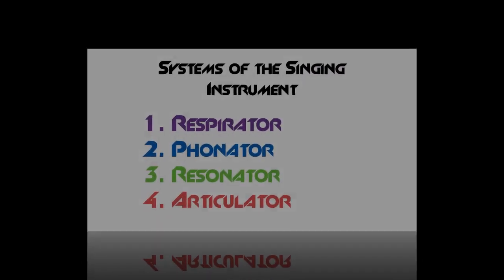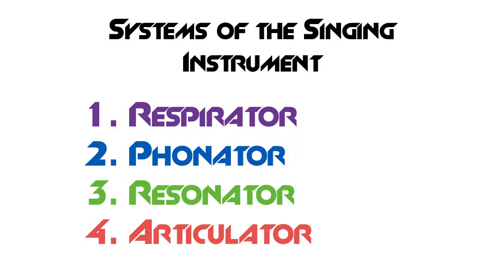There are four systems of singing: the respirator, the phonator, the resonator, and the articulator. We've already talked about two of these in depth — the resonator and the phonator — so that's breathing and your vocal folds vibrating. And the resonator and articulator are related.